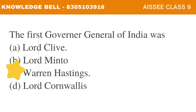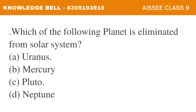Question number 5: Which one of the following planets is eliminated from the solar system? A. Uranus, B. Mercury, C. Pluto, D. Neptune. The correct answer is C: Pluto. Pluto is the planet which is eliminated from the solar system.